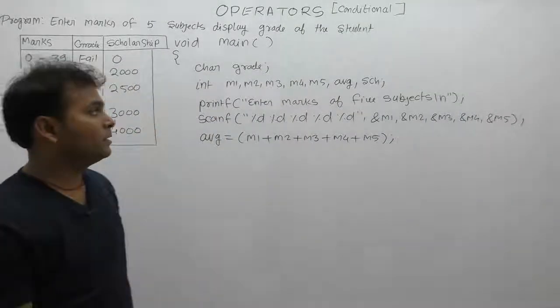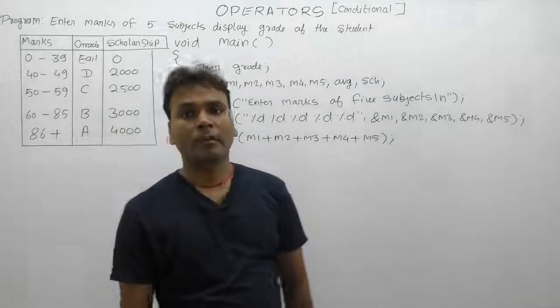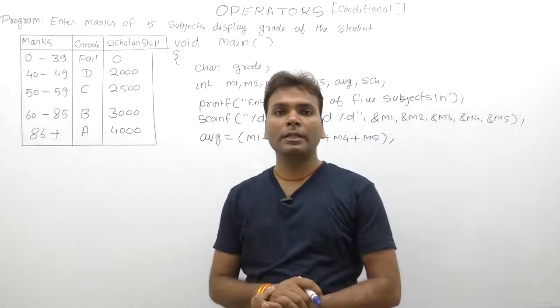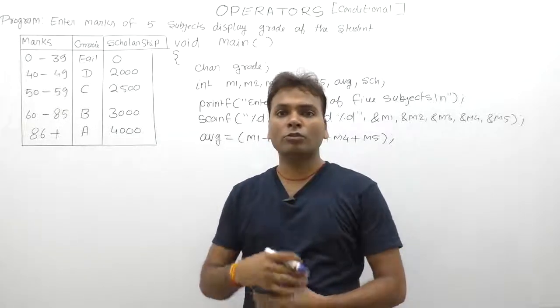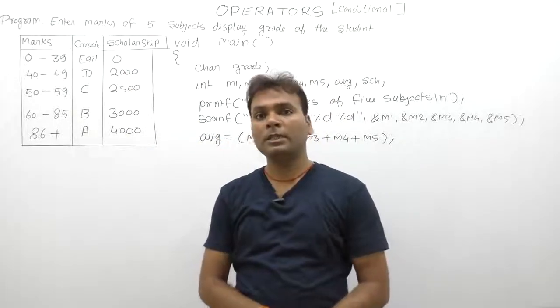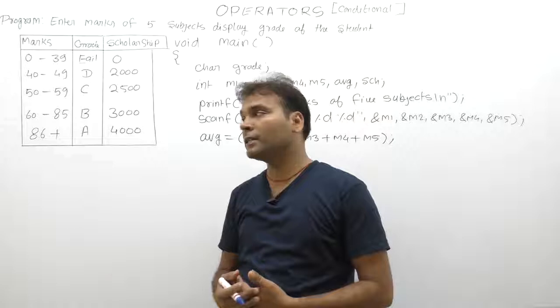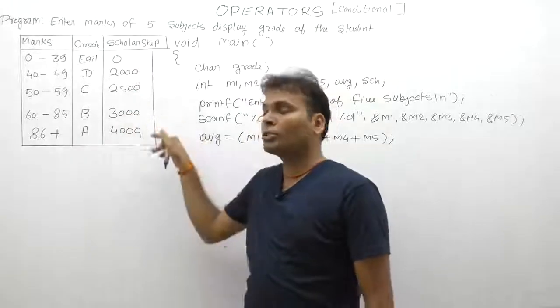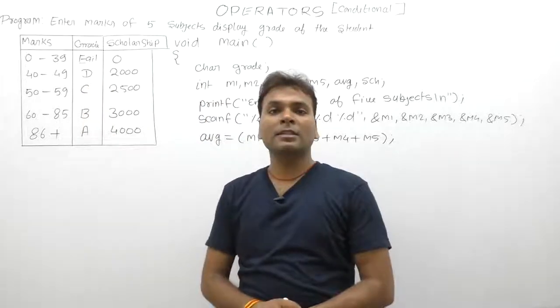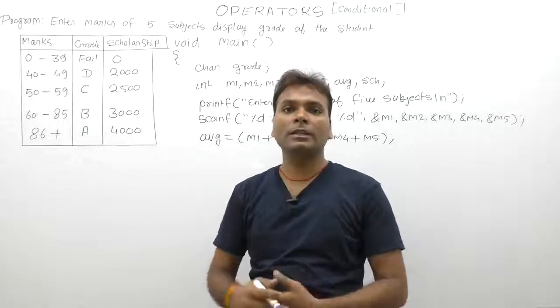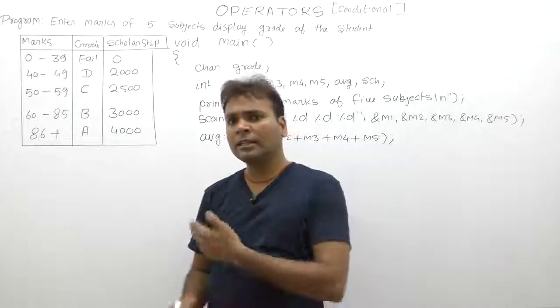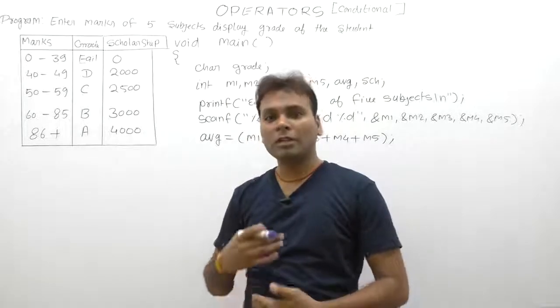Let's see another example. In the previous case, we were just calculating the grade of the student based on average marks. But in this case, we are also calculating scholarships based on average marks. This means the previous case only calculated grade, but this case calculates both grade and scholarship based on the range of average marks. These are the applications and logics required to manage school or college management software. This is not a big software, just a small part showing how to solve such criteria problems.